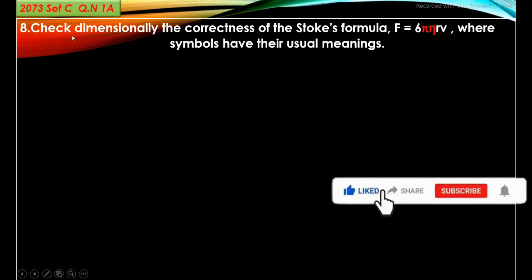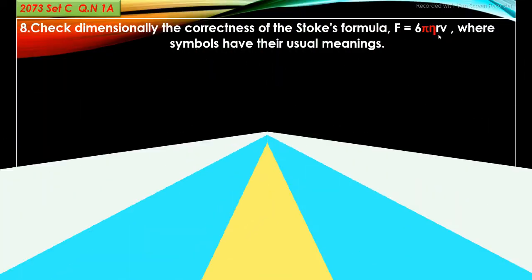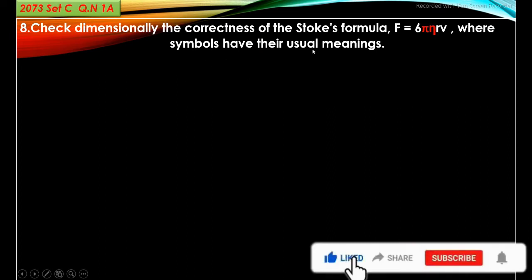Question: Check the dimensional correctness of Stoke's formula F = 6πηrv, where symbols have their usual meanings.